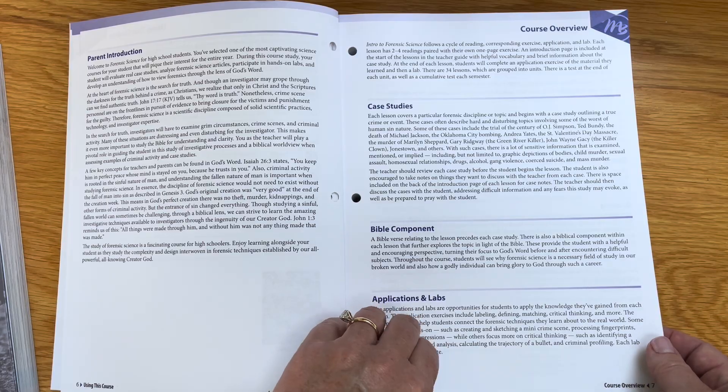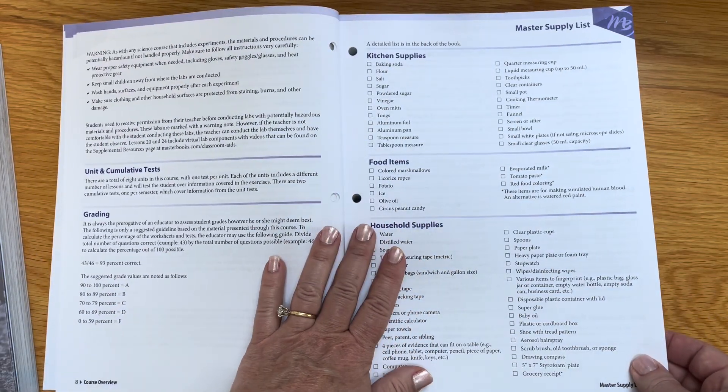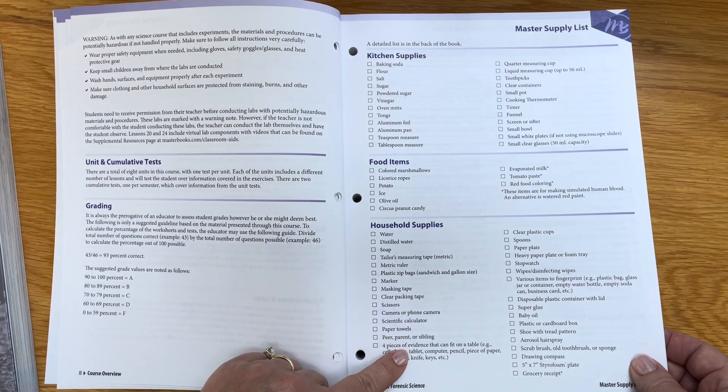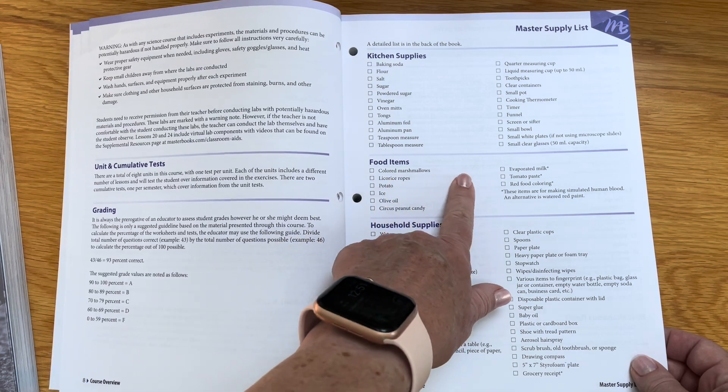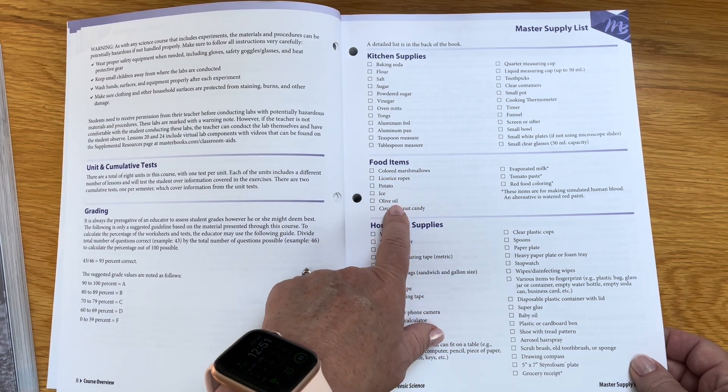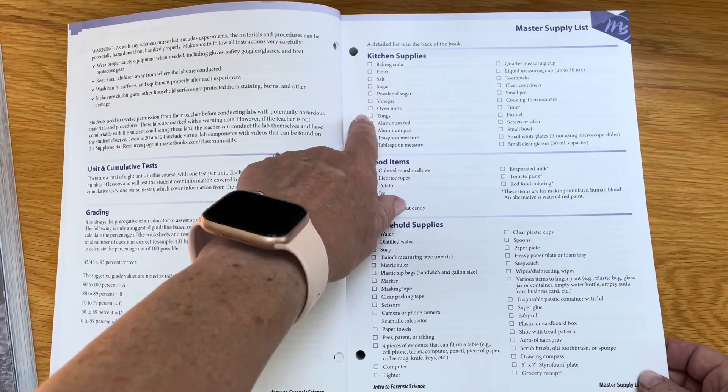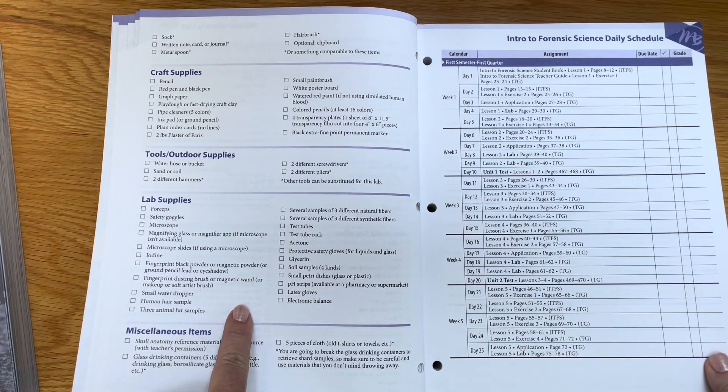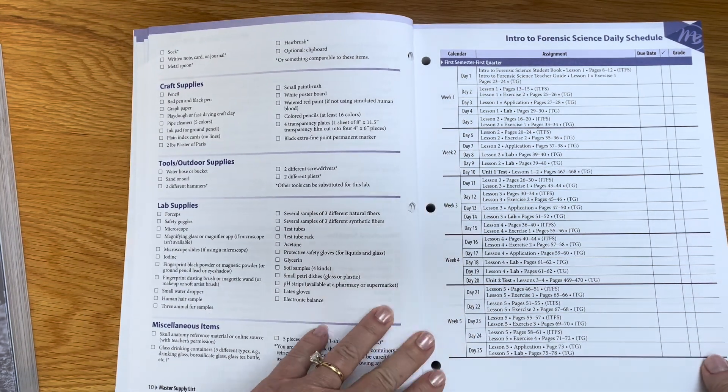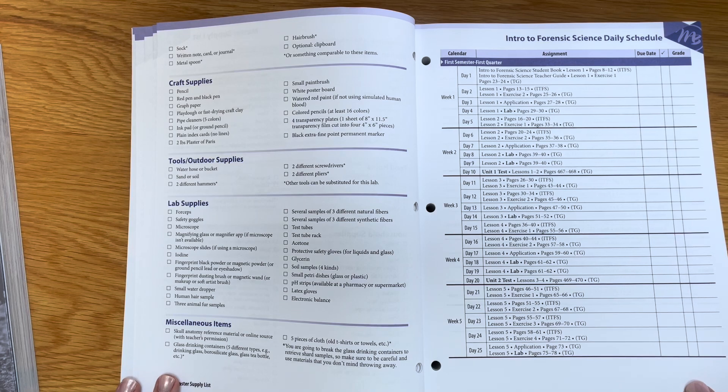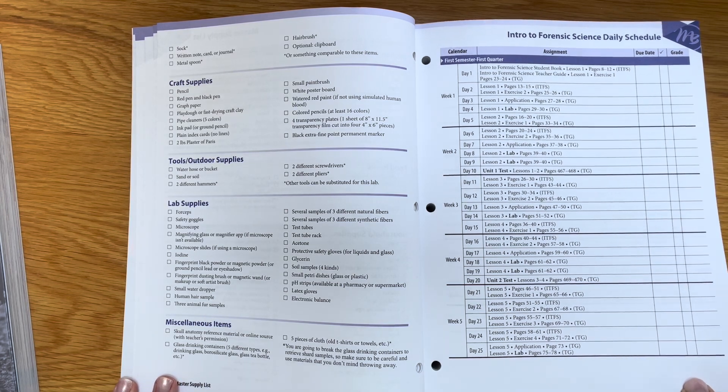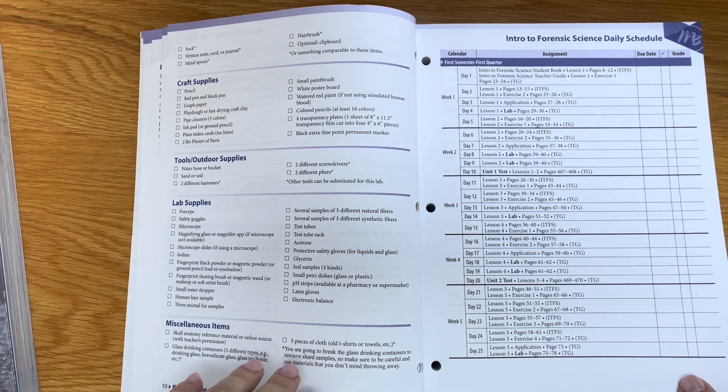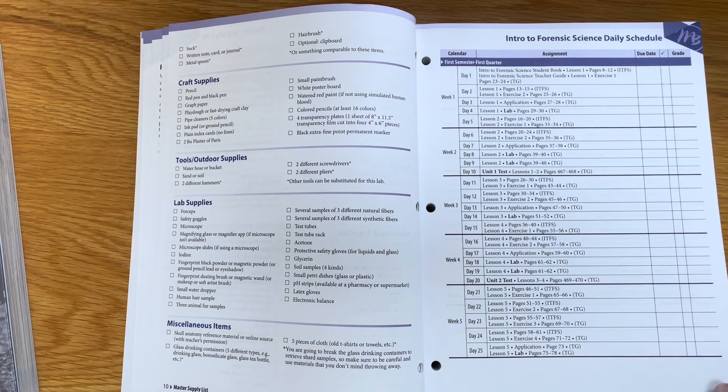I want to show you this quick overview of the supply list. Some things would be easy to find at home, some things are food that you could purchase like potato, olive oil, kitchen supplies. Then there are some other things that you would most likely need to order. I checked at the site where I like to get my homeschool lab materials. It's Home Science Tools, and you could use my affiliate link at IChooseJoy.org/HomeScienceTools.